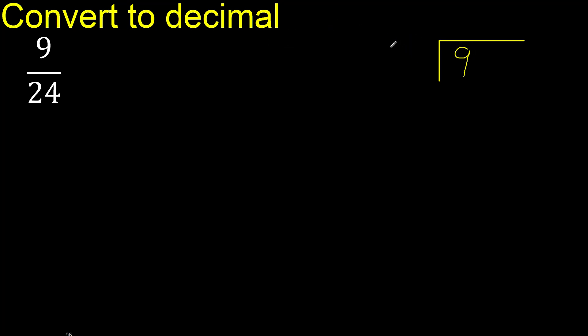9 divided by 24. 9 is less than 24, therefore always complete with 0 here. 0 point.